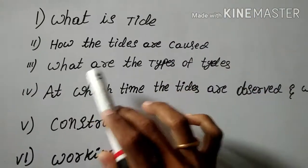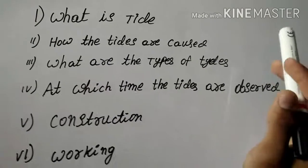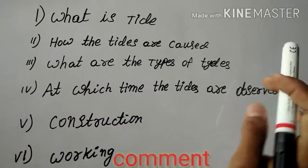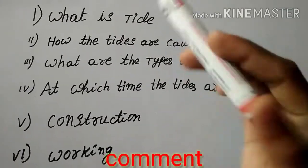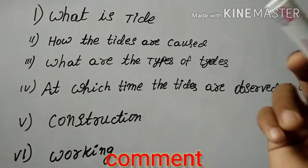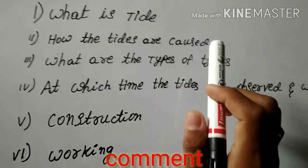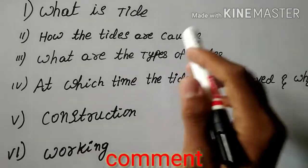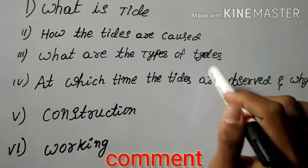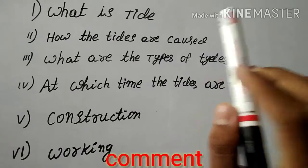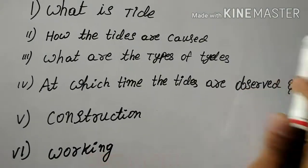Next, what are the types of tides? There are two types of tides: one is high tide and the second one is low tide. High tide is the maximum water level and low tide is the minimum water level.